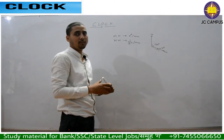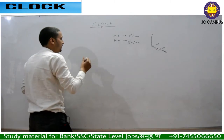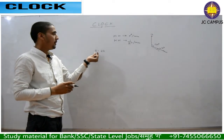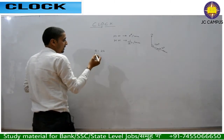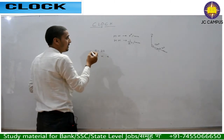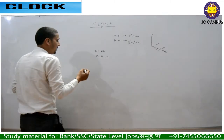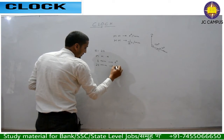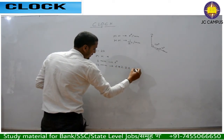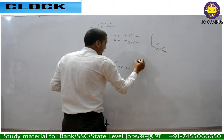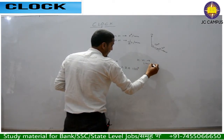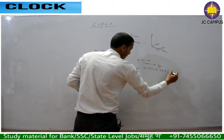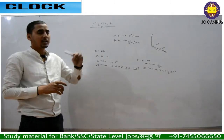Now let's take another example. If it is 5 hours and 22 minutes, how many degrees is the angle between the minute hand and the hour hand at 5:22? The minute hand moves 6 degrees per minute, so in 22 minutes it covers 6 × 22 = 132 degrees. The hour hand moves 1/2 degree per minute, so in 22 minutes it covers 22 × 1/2 = 11 degrees.